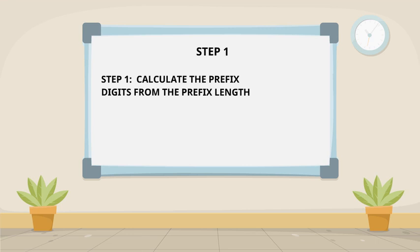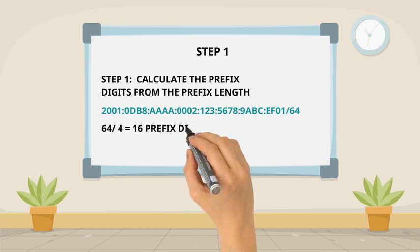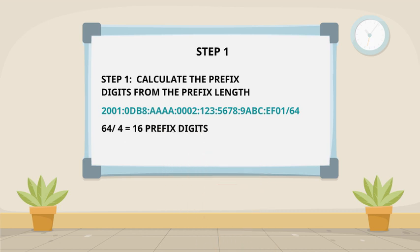So in this particular scenario, you have a slash 64 as your prefix length. This is very common. It's the most common prefix length that you would get within IPv6. You then need to divide that by four, which gives you 16 prefix digits.